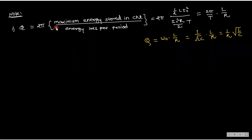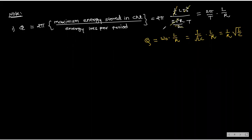Quality factor Q = 2π × (maximum energy stored in circuit) / (energy loss per period). Maximum energy stored is ½LI₀², and energy loss per period is (I₀²R/2) × T. Simplifying, Q = (2π/T) × (L/R) = ω₀L/R. Substituting ω₀ = 1/√(LC) gives Q = (1/R)√(L/C), confirming the earlier formula.